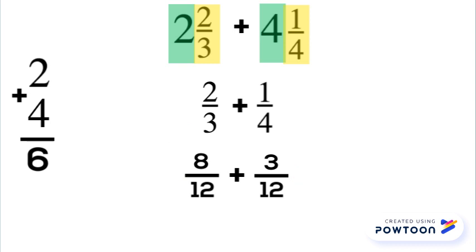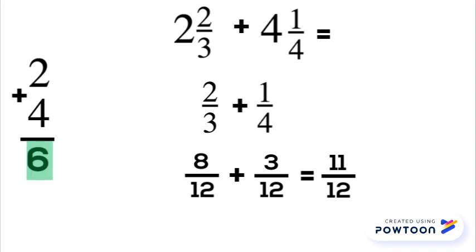Now, we can add our numerators, 8 plus 3, which gives us 11 twelfths. Now, we put our whole number answer over here to the side. We have to bring that back together with our fraction answer, so our final answer is 6 and 11 twelfths.